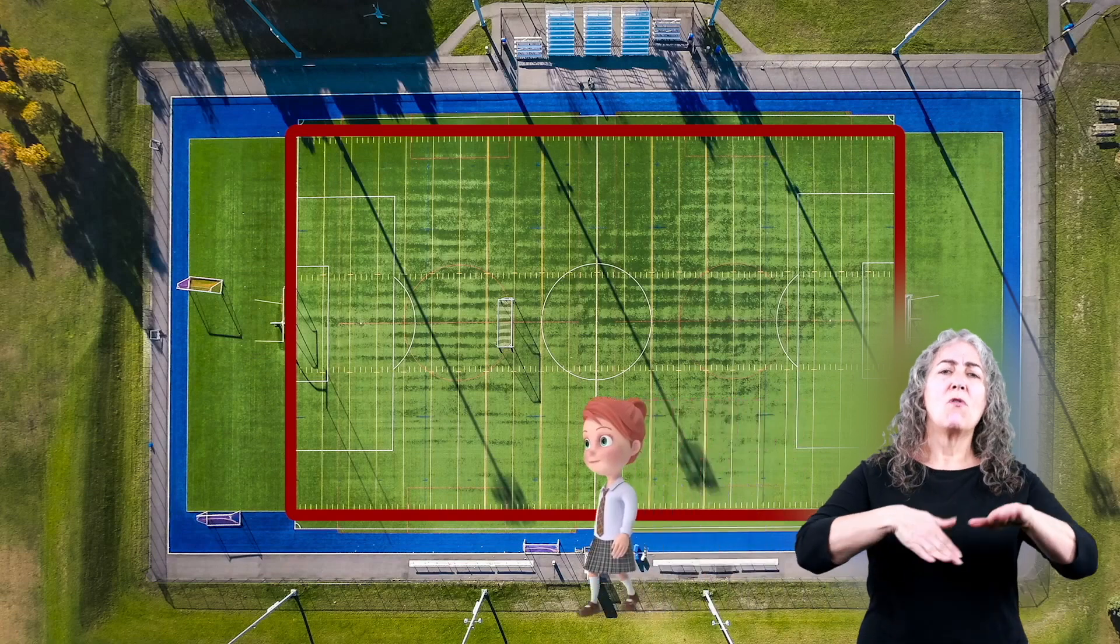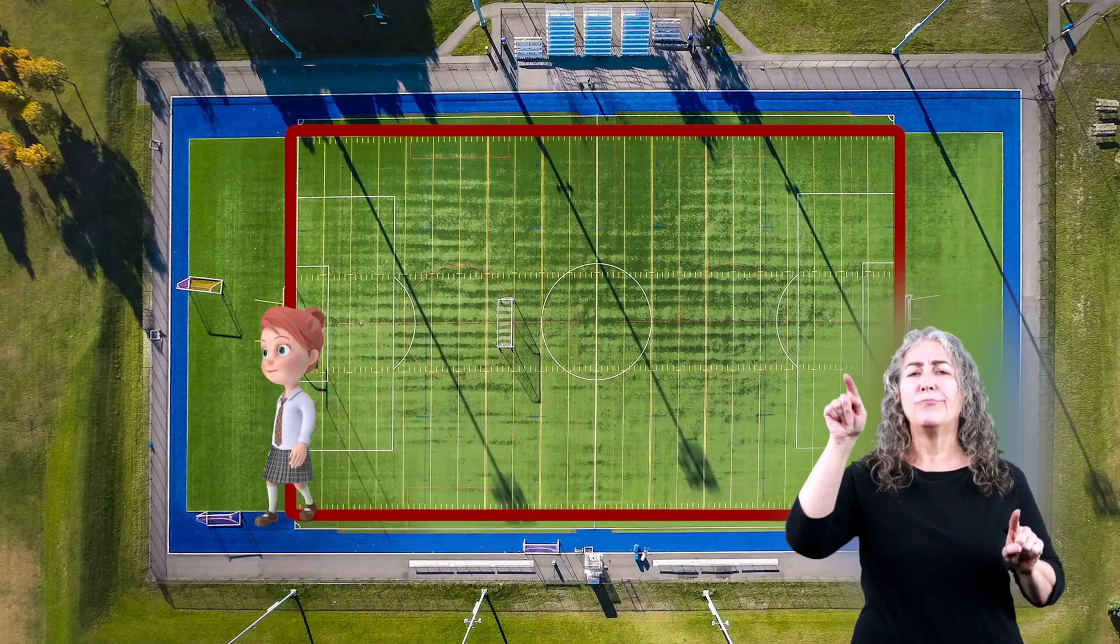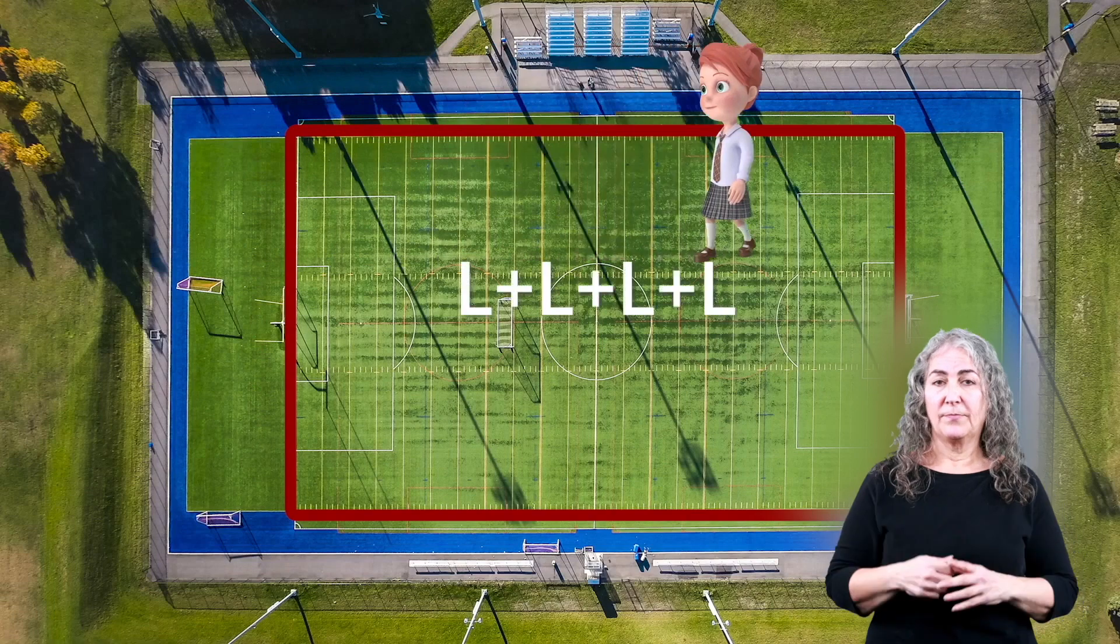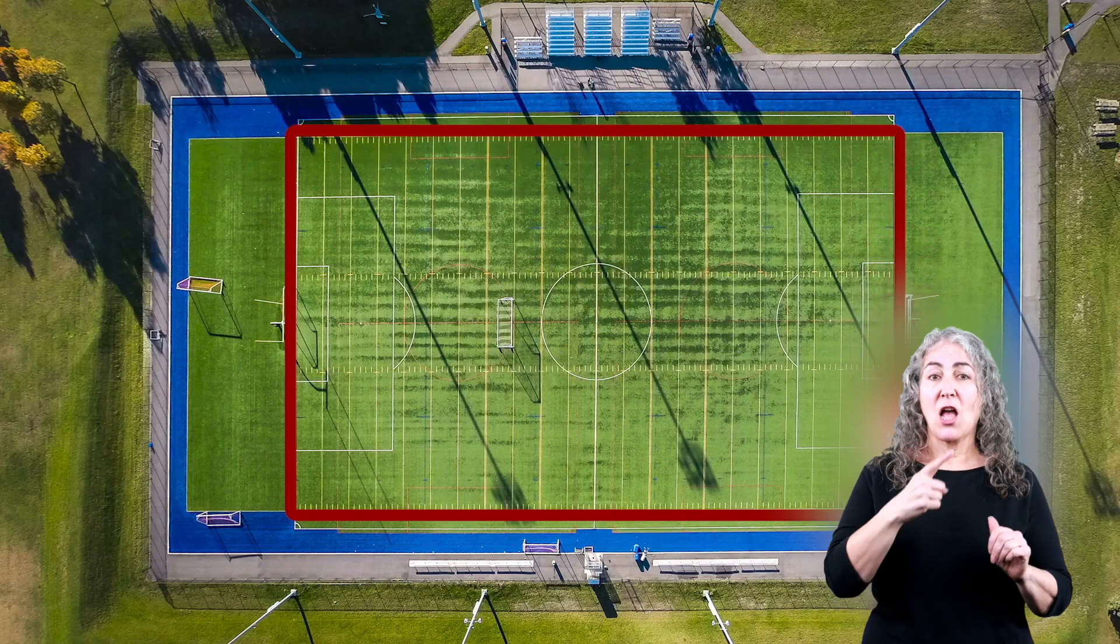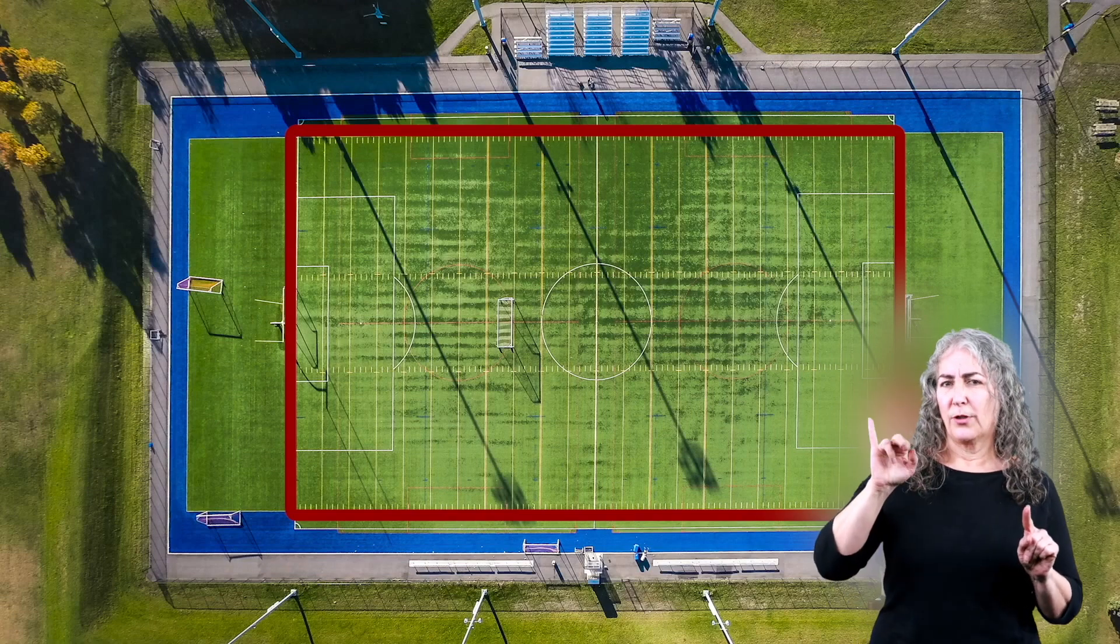Well, if you walk along the edge of that rectangle all the way around and total up the length of each side you walk, you'd be figuring out the perimeter. See that red line going around the field? That's its perimeter.